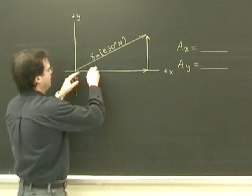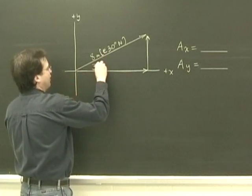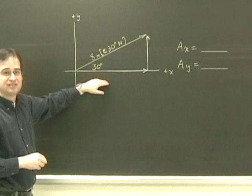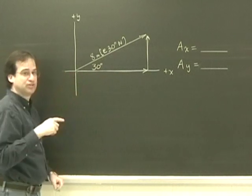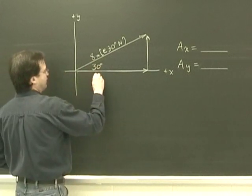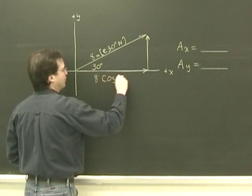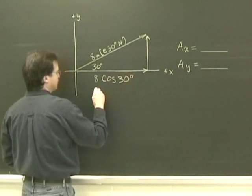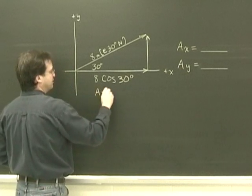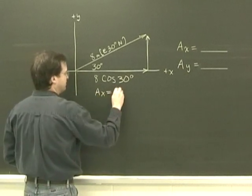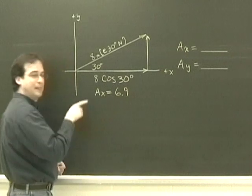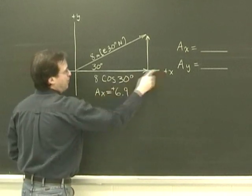We're going to memorize that if this is 30 degrees here, the adjacent side is going to be my cosine. So this will be the vector 8 times the cosine of 30 degrees. So my Ax is going to be 6.9, it's to the right, which is positive.